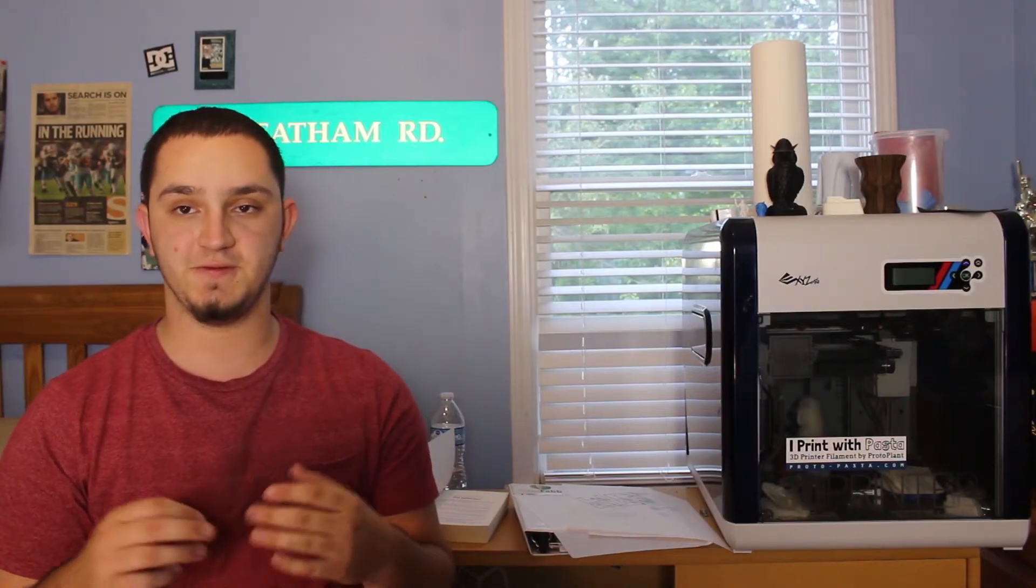Sandpaper wise, depending on my layer height, I start somewhere at either 80 grit or 150 grit. I went with 150 grit with this Marvin as he was printed with 150 microns. As you use it to knock down your thick layer heights and the ridges that creates, you want to transition over to a 220 grit sandpaper, and then you want to move up to 400.